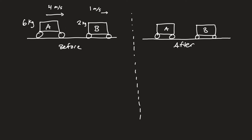Consider this example: we have a six kilogram car moving at four meters per second to the right, and a two kilogram car moving at one meter per second to the right. Clearly car A is going to run into car B. Take a second and think about what the relative velocity between the two cars is in this situation.